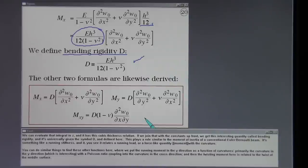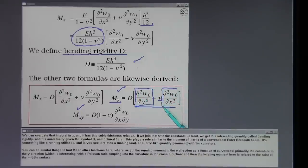This plays a role similar to the moment of inertia of a conventional Euler-Bernoulli beam. It's something like a running stiffness and you see it relates a running load or a force like quantity with the curvature. You can do similar things to find these other functions here where we put the running moment in the y-direction as a function of curvatures. Primarily the curvature in the y-direction which is interesting with the Poisson ratio coupling into the curvature in the cross direction. And then the twisting moment here is related to the twist of the middle surface.